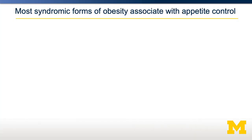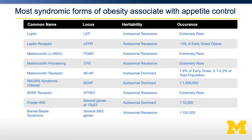Leptin deficiency is quite rare — only a few cases have ever been discovered. A table shows several other genes described from syndromic forms of obesity, generally identified through pedigree analysis. These include leptin, the melanocortin receptor, and others. The melanocortin receptor, while rare, exists in about five percent of early onset cases or about 0.2 percent of the total population.